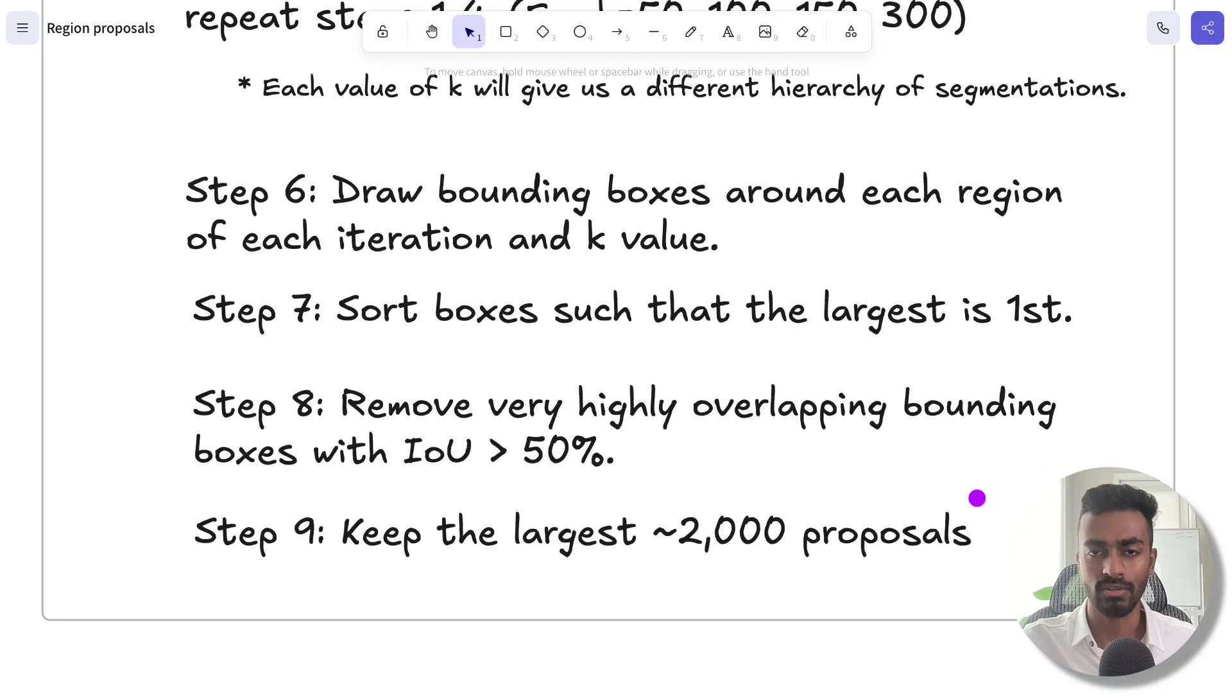Next, what we'll do is we'll draw bounding boxes around each region of each iteration and each value of K. So there's tens of hundreds of thousands of these bounding boxes, as each segment now has a little bounding box. Then we sort these bounding boxes such that the largest bounding boxes first, and then we will iteratively remove bounding boxes that overlap with these largest bounding boxes.